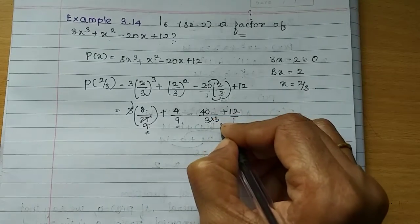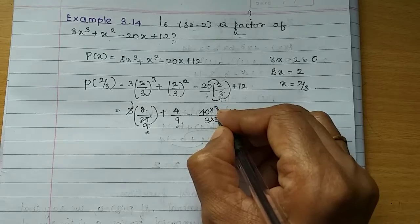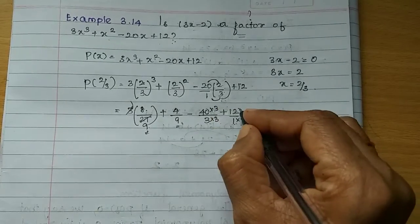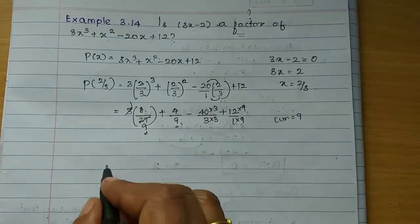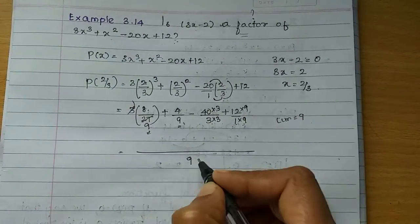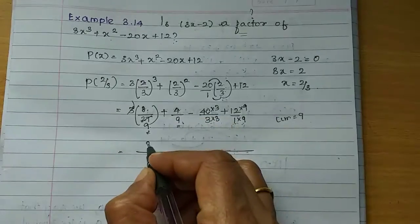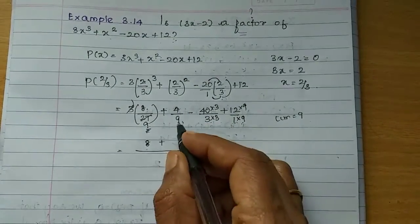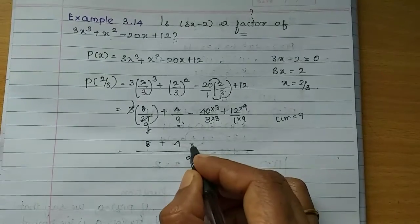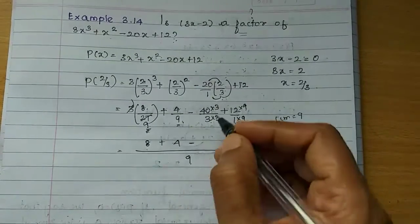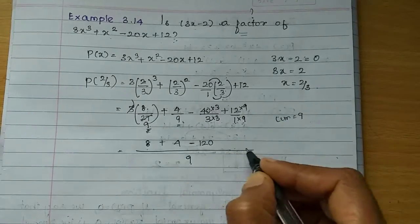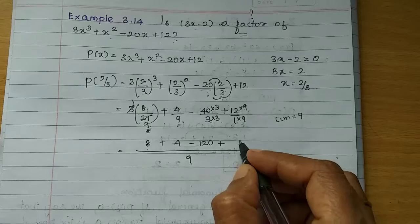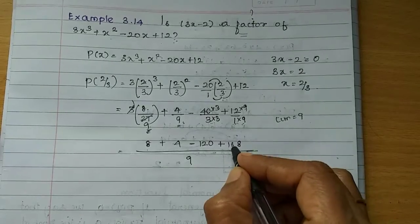It is 9 in the numerator. So if you multiply 9 in the numerator, you multiply it in the numerator. We have 8. There is 4. Minus 3 is 9. Then 40 into 3 is 120. Plus 12 into 9. 9 times 2 is 18, then 108.